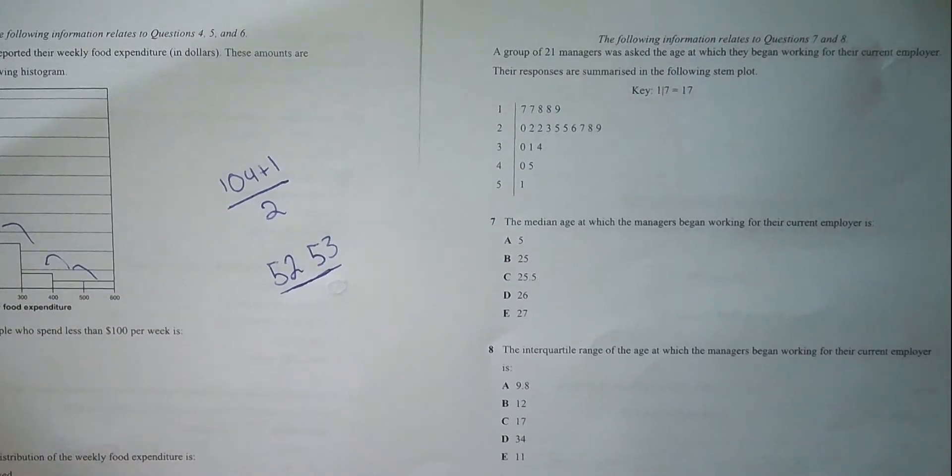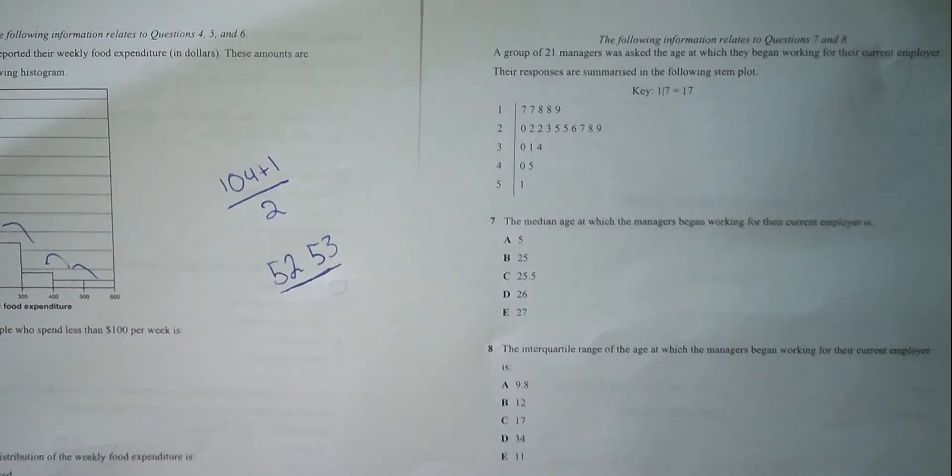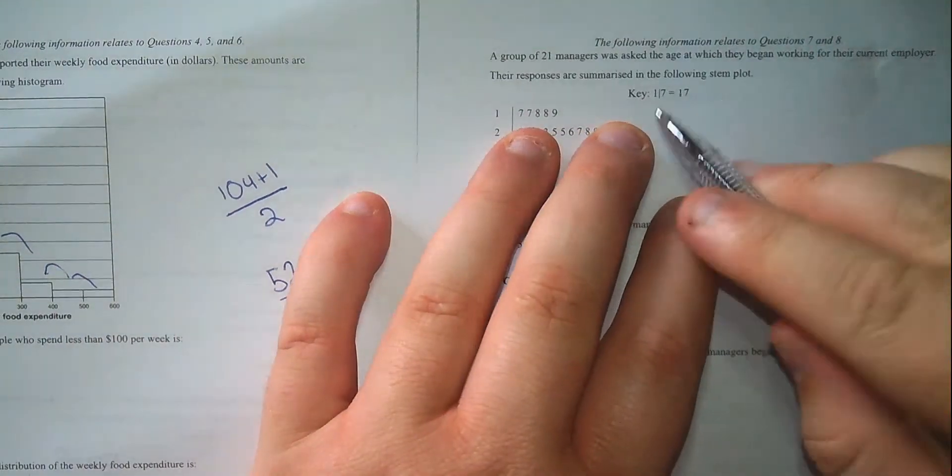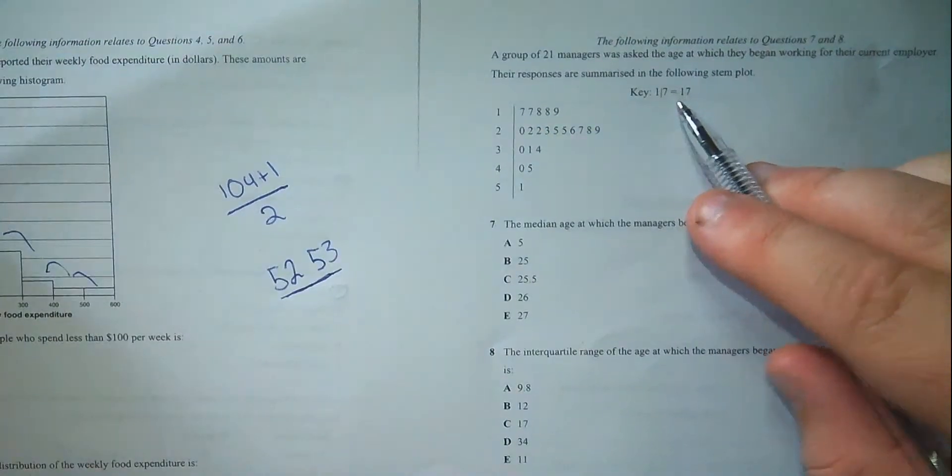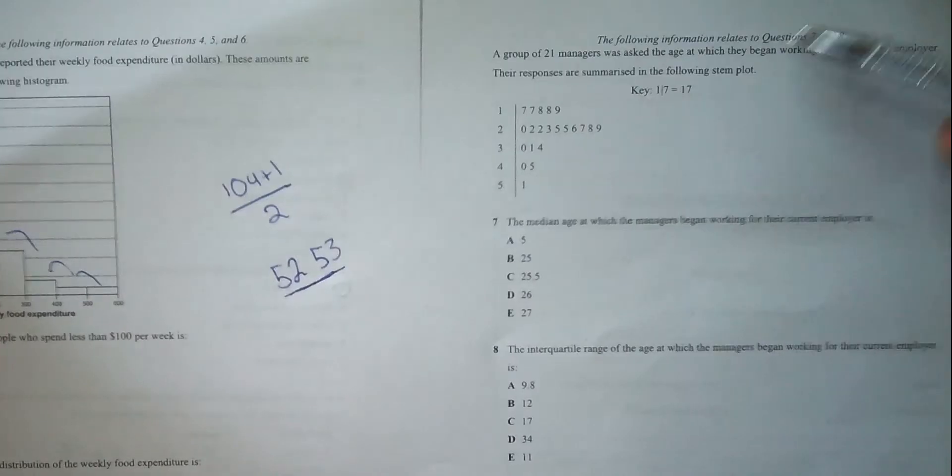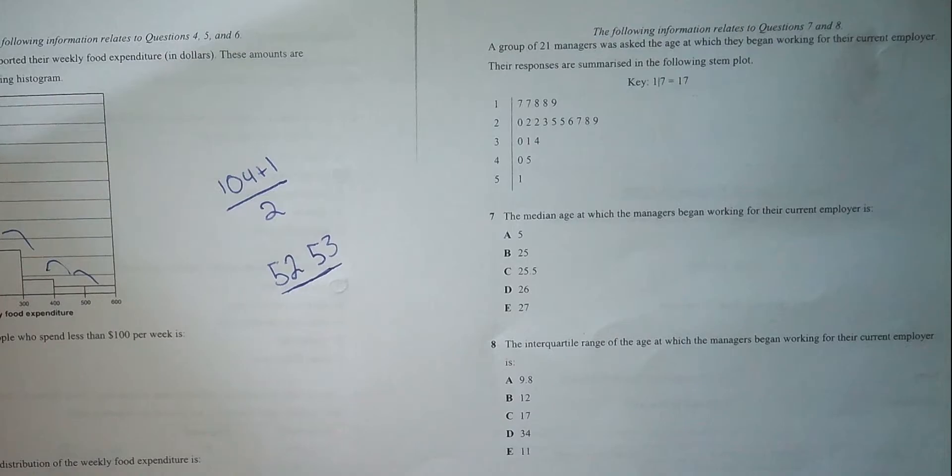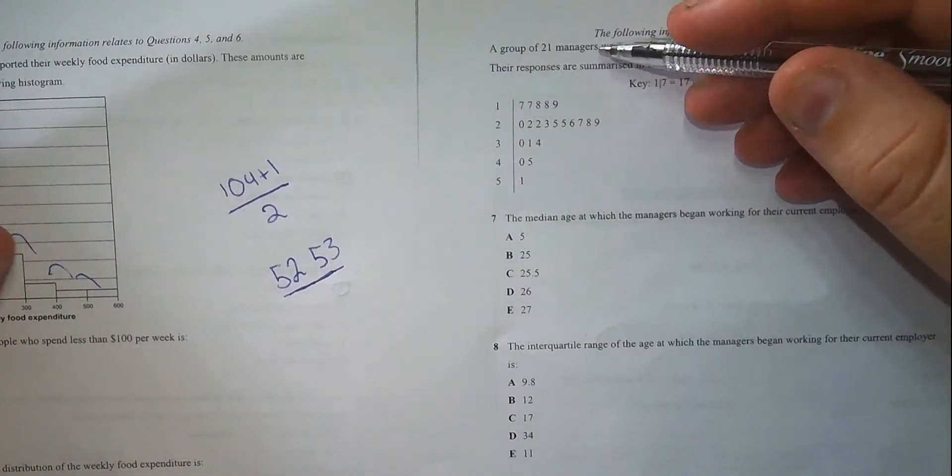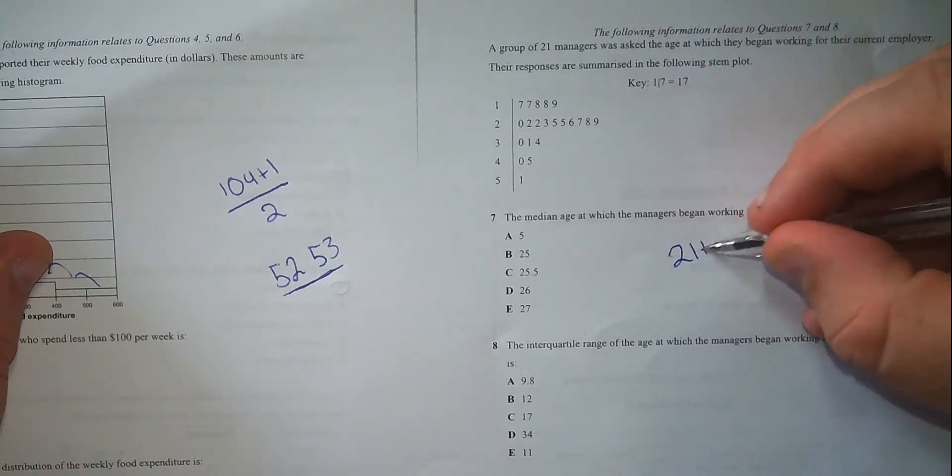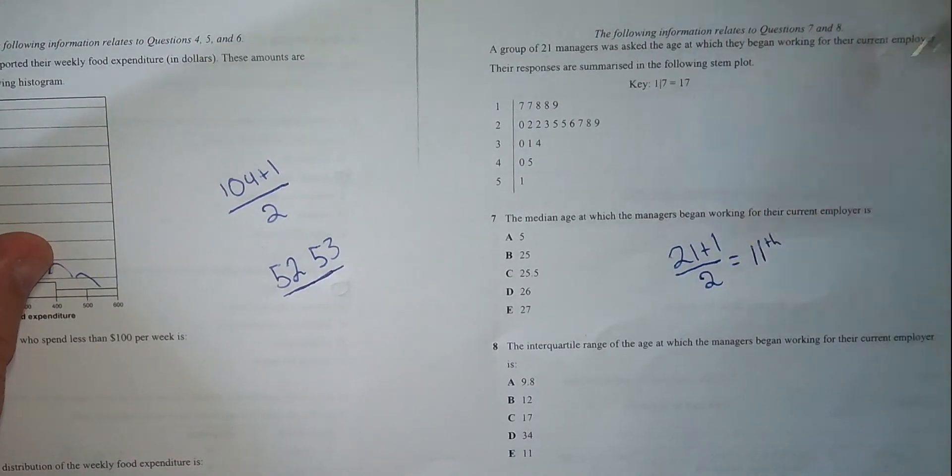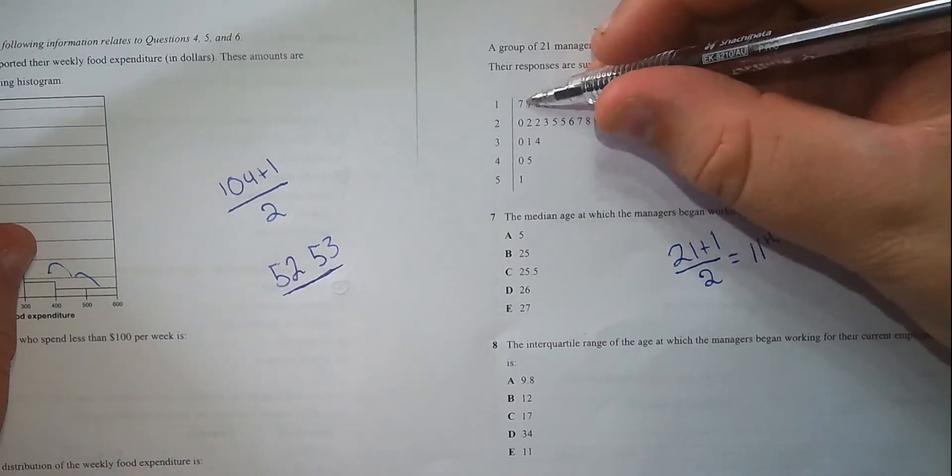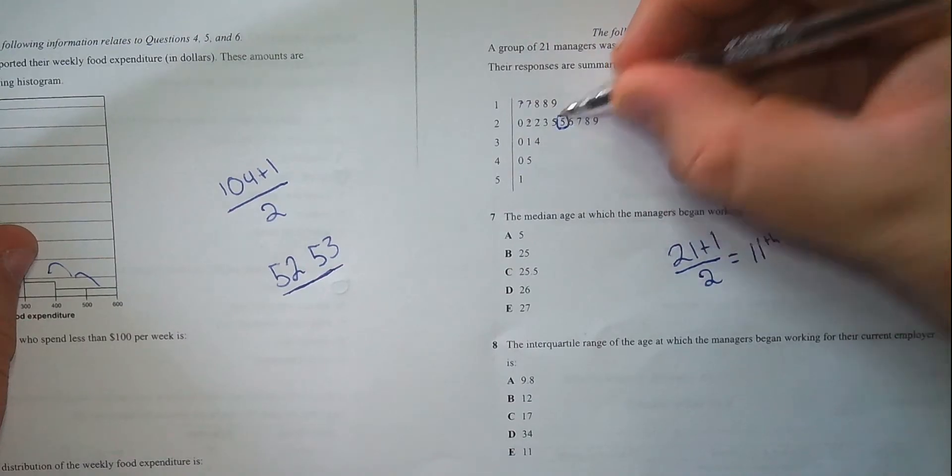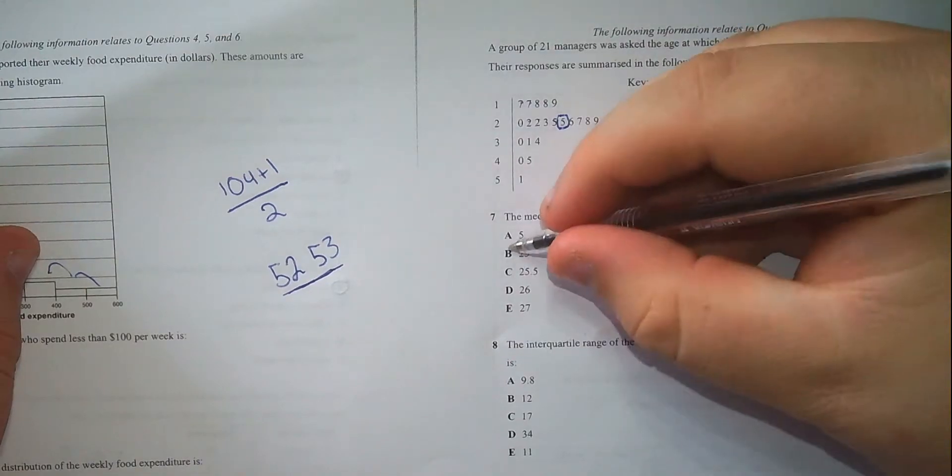We have a group of 21 managers asked what age they began working for their current employer, and their response is shown in the stem plot below. The median age - to find the median, I do 21 plus 1 divided by 2, which means the 11th age in order is our median. So I'm just going to go through and count: 1, 2, 3, 4, 5, 6, 7, 8, 9, 10, 11. That is our median person there. So the age is 25.